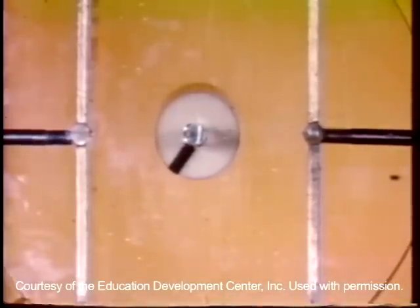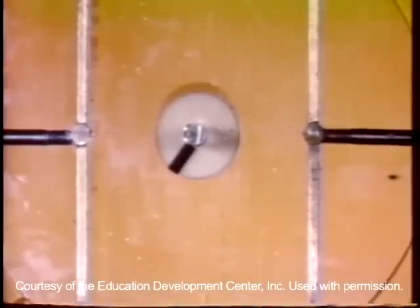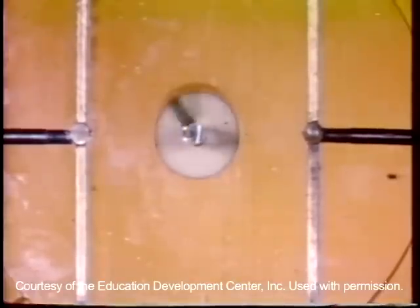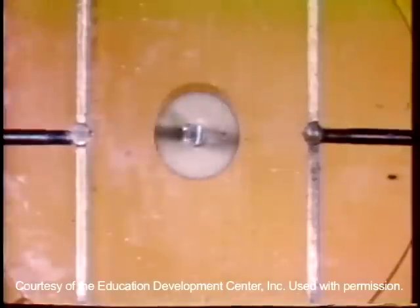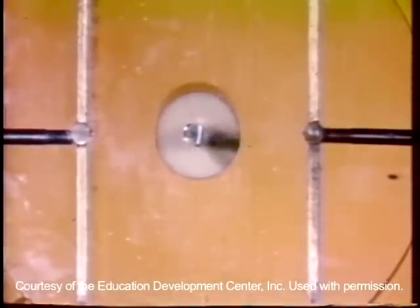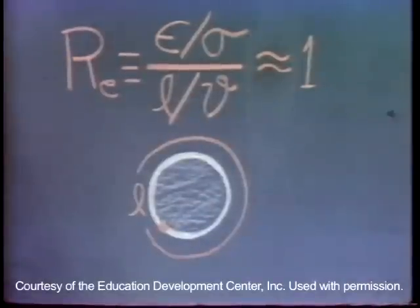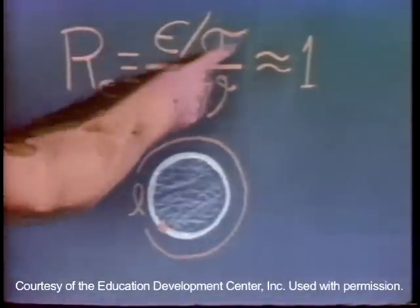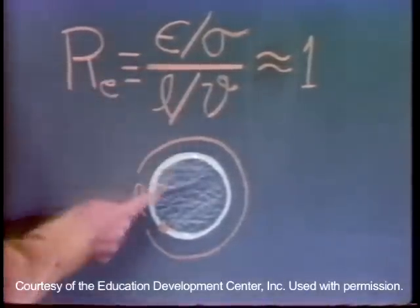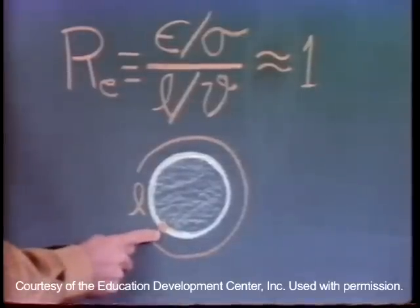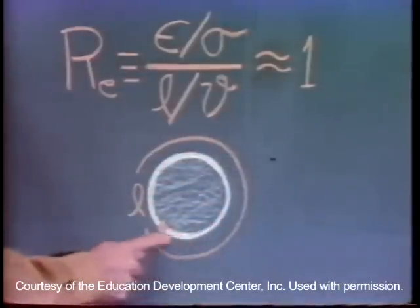Steady rotation is maintained because the convection of the surface charge is just compensated by its relaxation through conduction in the corn oil. The cylinder begins to rotate only because there is both an effect of the field on the motion and of the motion on the field. The rotation alters the charge distribution because the ratio of relaxation time in the oil to the time required for a point on the cylinder surface to make one revolution is about unity.